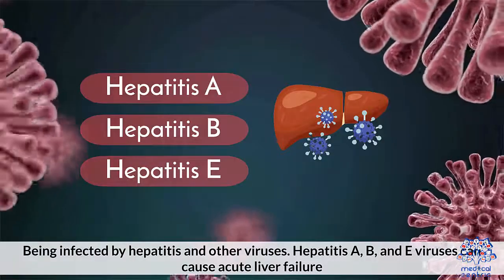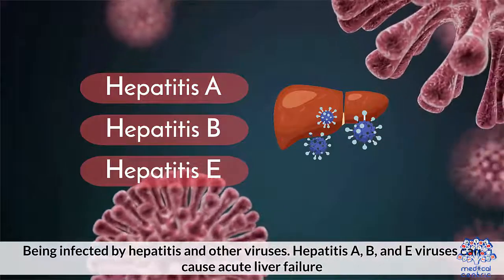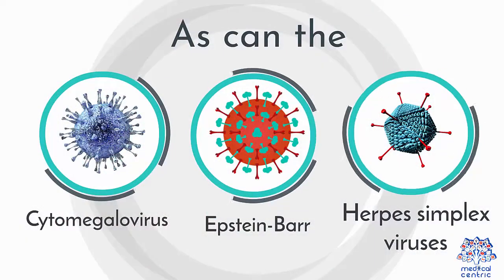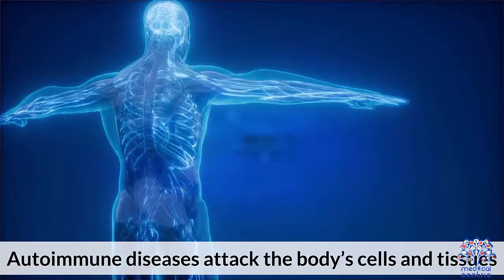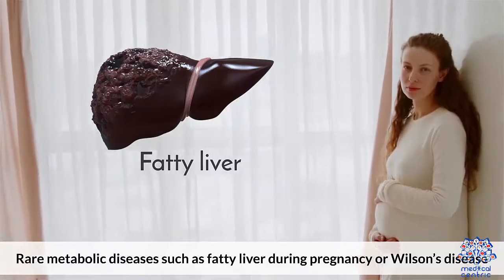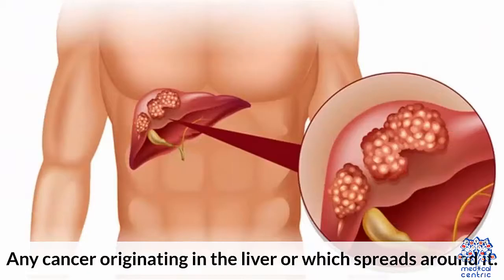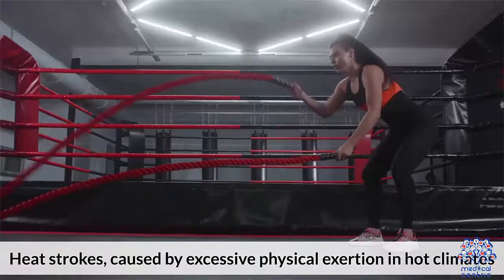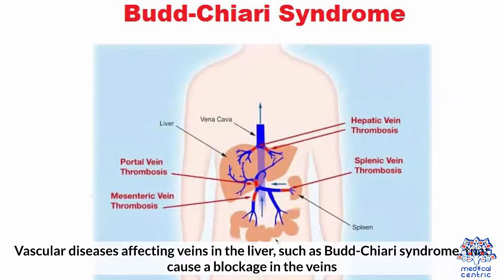5. Being infected by hepatitis and other viruses — Hepatitis A, B, and E viruses can cause acute liver failure, as can the cytomegalovirus, Epstein-Barr, and herpes simplex viruses. 6. Autoimmune diseases that attack the body's cells and tissues. 7. Rare metabolic diseases such as fatty liver during pregnancy or Wilson's disease. 8. Shock and overwhelming infection that disrupt blood flow to the liver. 9. Any cancer originating in the liver or which spreads around it. 10. Heat strokes caused by excessive physical exertion in hot climates. 11. Vascular diseases affecting veins in the liver, such as Budd-Chiari syndrome, that cause a blockage in the veins.